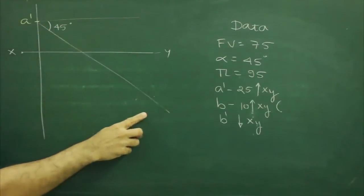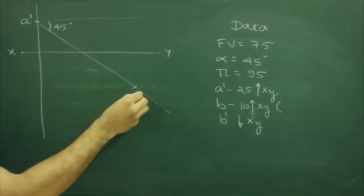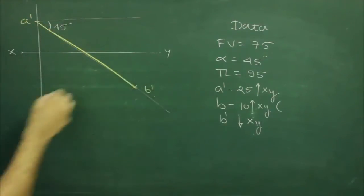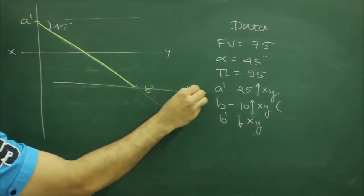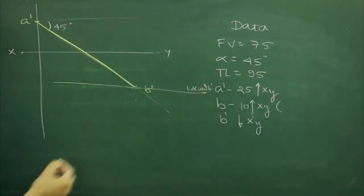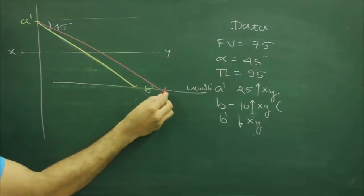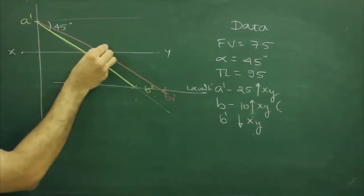We can cut front view on this which is 75, so this point would be B'. So we got locus also. B', we have true length as well, so from here we can cut true length also. This is B' which is 95.